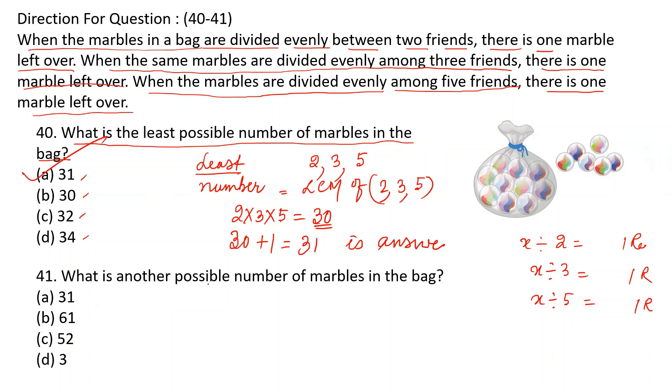What is another possible number of marbles in the bag? The next number divisible by 2, 3, 5 will be multiples of 30 because 30 is LCM. 30 is divisible by all. Next number divisible by all will be 60, then 90. Again, I am getting remainder in each case. So it will be 31 first number, here it will be 61, here will be 91.